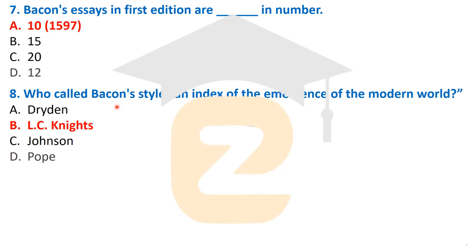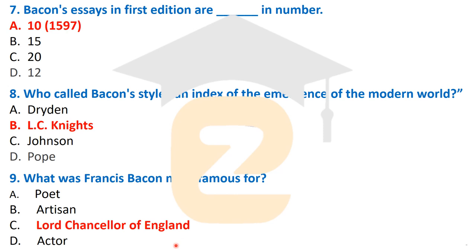Who called Bacon's style an index of the emergence of the modern world? That was said by L.C. Knights. Next: What was Francis Bacon most famous for? He was most famous for being Lord Chancellor of England. He is also regarded as an essayist of English literature, but his most prominent public role was Lord Chancellor of England.